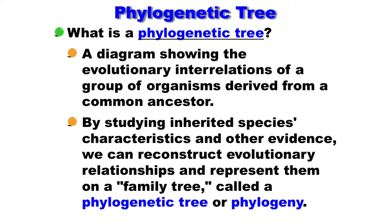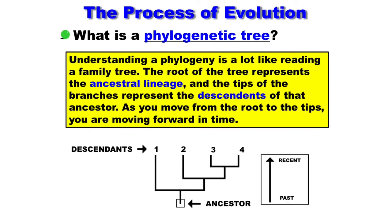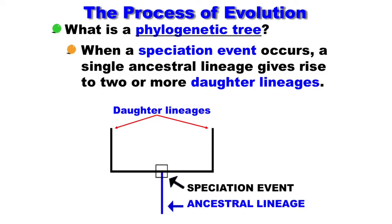A phylogenetic tree is a diagram showing the evolutionary interrelations of a group of organisms derived from a common ancestor. By studying inherited species characteristics and other evidence, we can reconstruct evolutionary relationships and represent them in a family tree called a phylogenetic tree or phylogeny. The root of the tree represents the ancestral lineage and the tips of the branches represent descendants. As you move from the root to the tips, you move forward in time. When a speciation event occurs, a single ancestral lineage gives rise to two or more daughter lineages.